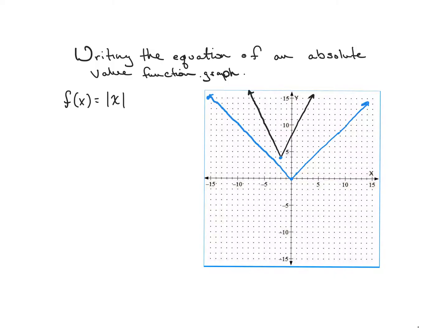The new vertex is at the coordinate pair negative 2, 4. This vertex was shifted 2 to the left, so this new function, g of x, created from f of x, will be the absolute value of x plus 2 — because if we shift left, it's the opposite, so we add 2. Then it went up 4, so we add 4 on the outside of the function.